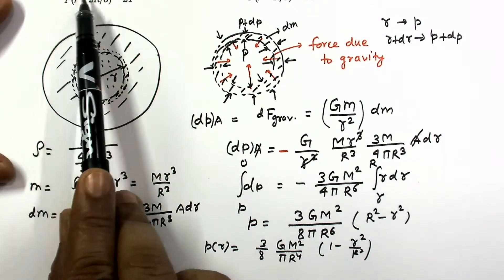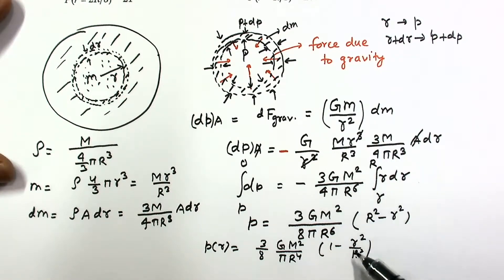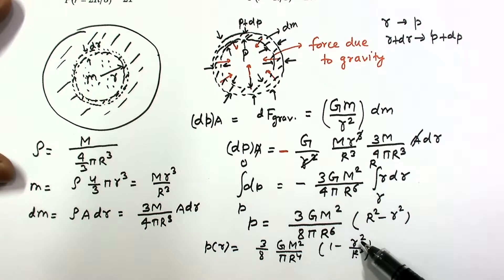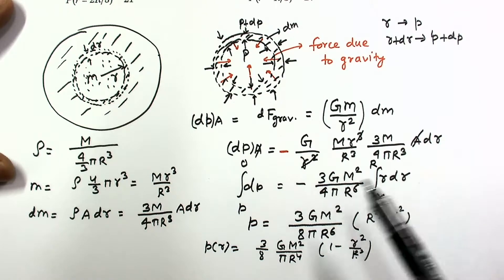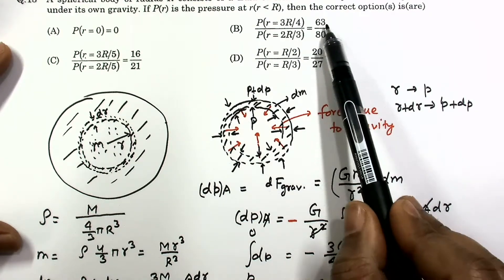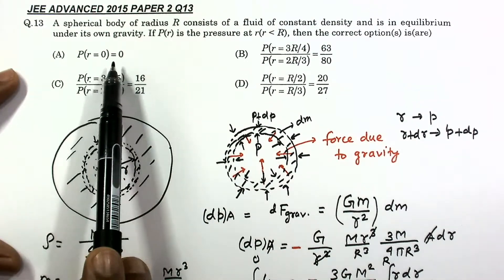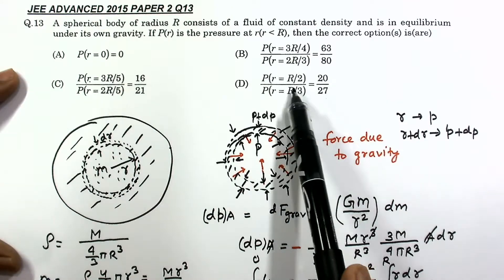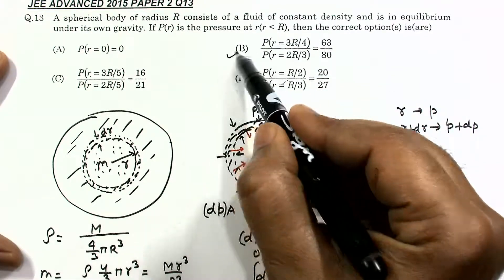For the ratio calculation needed in the JEE options: putting r/R = 3/5 gives (1 − 9/25) = 16/25, and putting another value gives (1 − 4/25) = 21/25. The ratio is 16/21. Similarly, option B gives 63/80, and checking option C also gives 16/21. At r = 0, pressure is not zero, so that option is incorrect. Putting r/R = 1/2 and 1/3 also does not match. Therefore, the correct options for this question are B and C only.